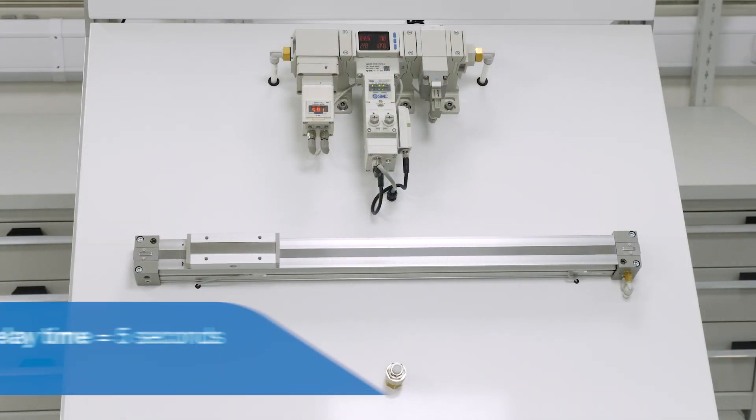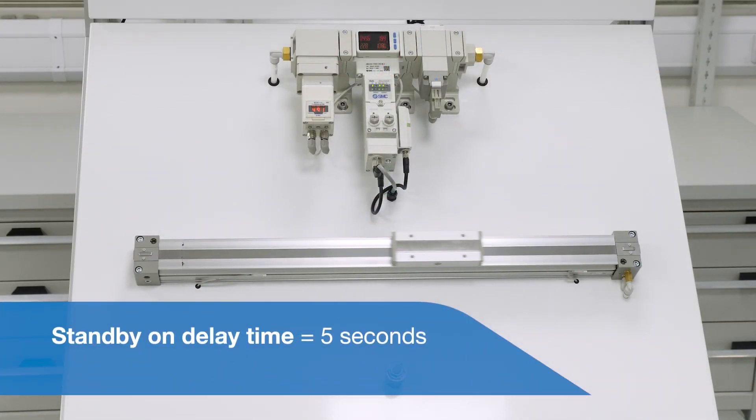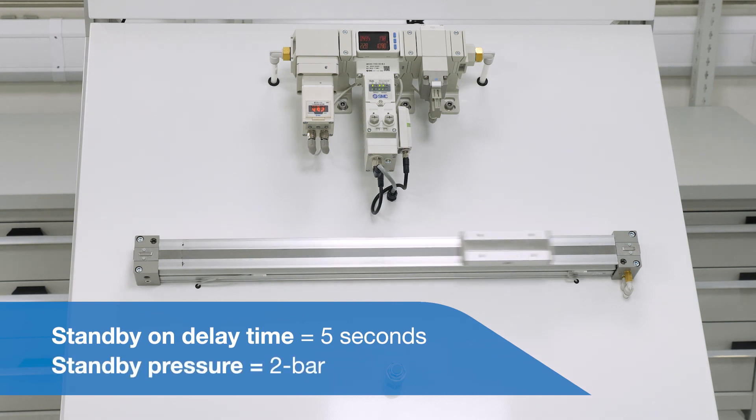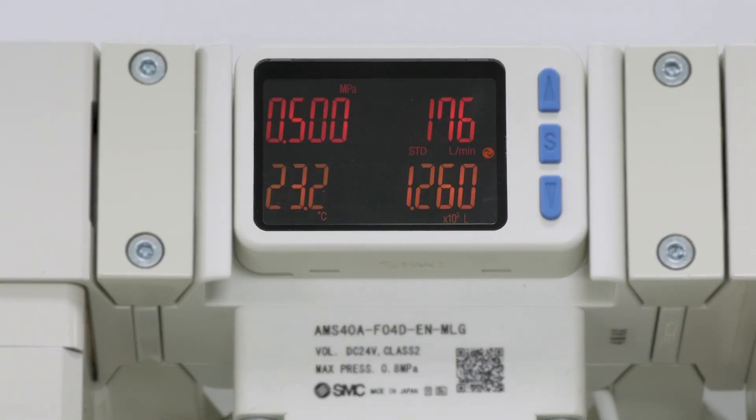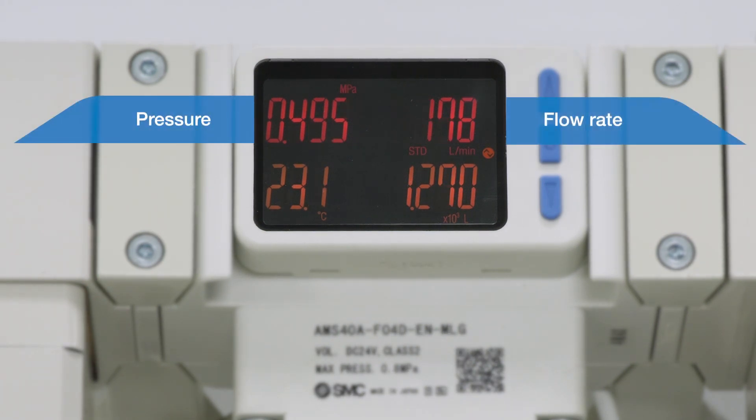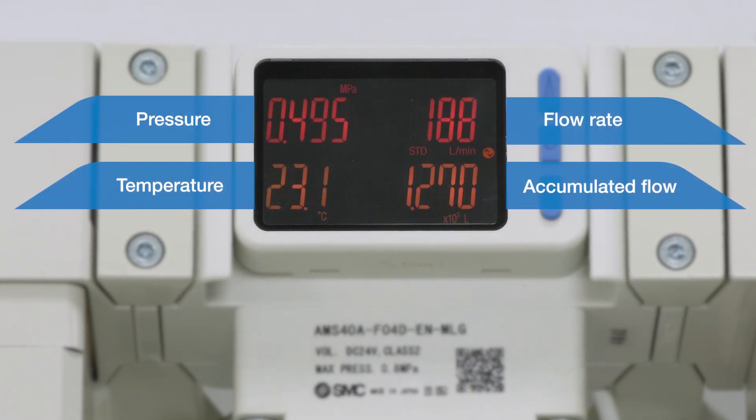In this example the standby on delay time has been set to 5 seconds. The standby pressure has been set to 2 bar. The display shows current pressure, flow rate, temperature and accumulated flow values all of which can be monitored remotely.